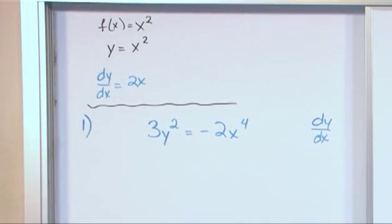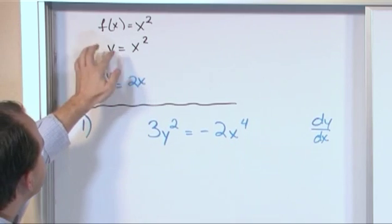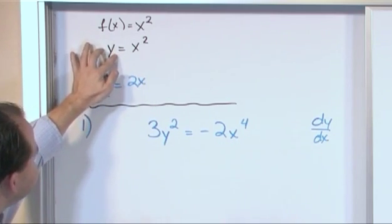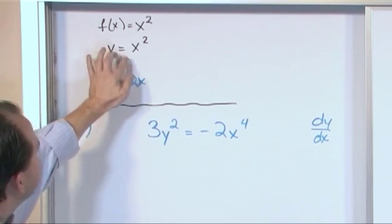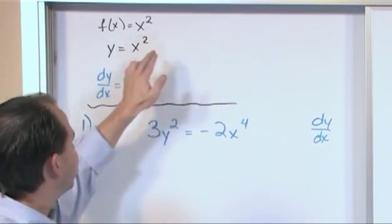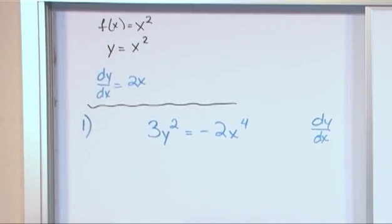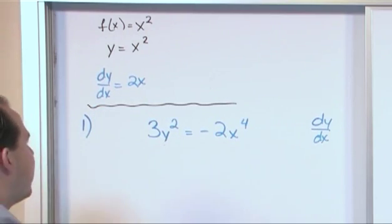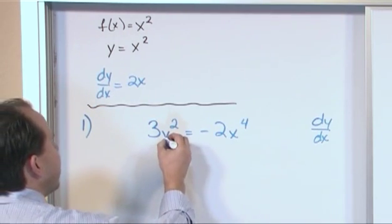Well, you have never been given a function or a problem like this. In all of the problems that we've given you, we've always given you the variable, the dependent variable is equal to some function of the independent variable on the right hand side. Everything's been solved for, so y is by itself. But here that's not the case. We have 3y squared is equal to something on the right hand side.